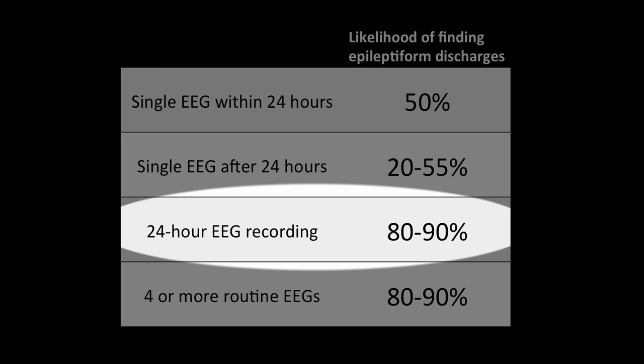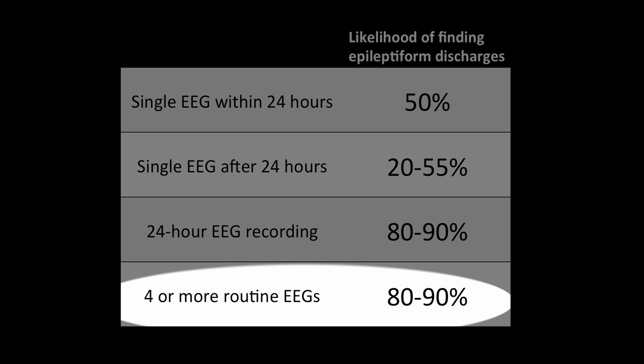On prolonged 24 hour EEG recording, the likelihood of picking up some epileptiform discharges is much higher, in the range of 80 to 90%. But again, this means that 10 to 20% of the time, even prolonged EEG can be normal in a patient with epilepsy. Several routine 30 to 60 minute EEG recordings can produce the same yield as a 24 hour recording, but may be less practical.